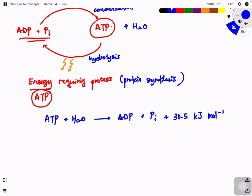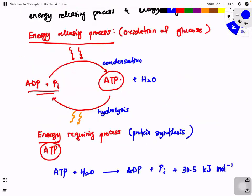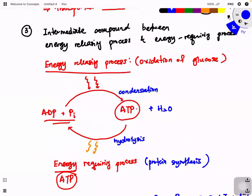This energy is released as a small, manageable package of 30.5 kilojoules - not a sudden release of a huge amount of energy, which would overheat and burn cells. The energy is released in a controlled, small package.